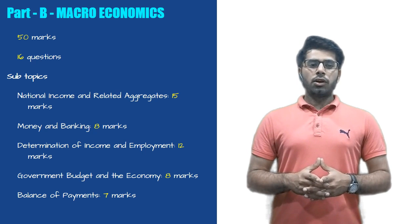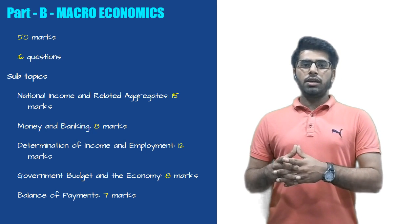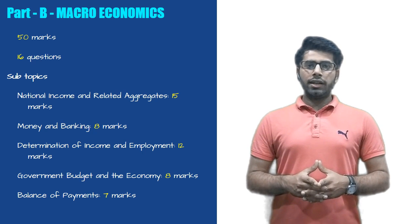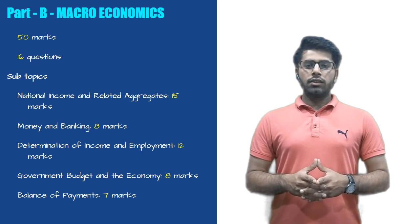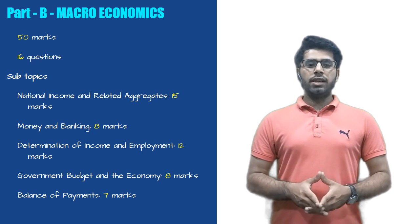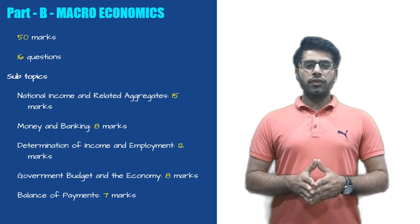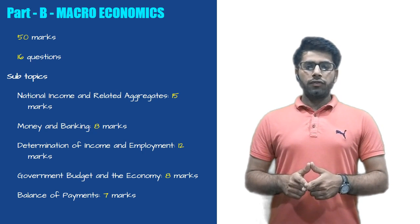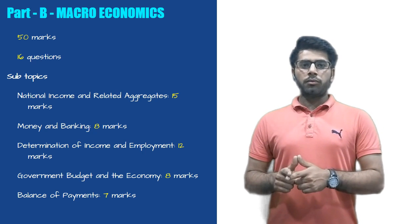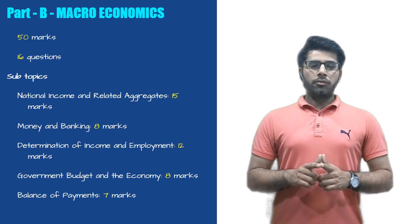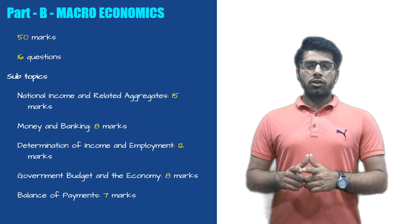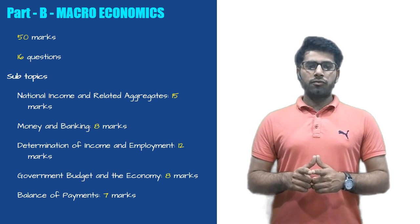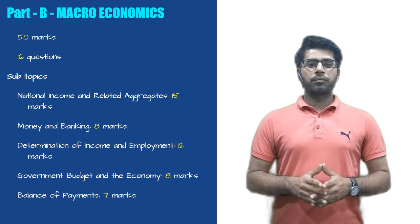Sub topics included in Part B are: National Income and Related Aggregates carrying 15 marks, Money and Banking carrying 8 marks, Determination of Income and Employment carrying 12 marks, Government Budget and the Economy carrying 8 marks, and Balance of Payment carrying 7 marks.